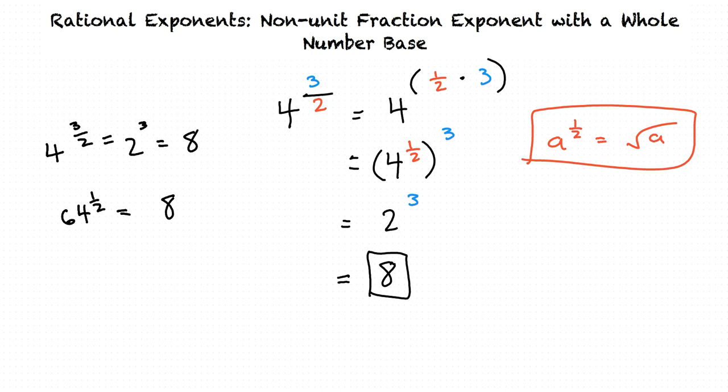Okay, thanks. Just to summarize, when I see a non-unit rational exponent, I can break the exponent apart into the numerator times the fraction 1 over the denominator, such as 3 times 1 half. Then I can take the root of the base that the unit fraction directs, and then raise that to the power of the numerator of the original exponent. Or, I can raise the base to the power of the numerator first, and then take the root of that according to the unit fraction. Exactly. Great explanation.